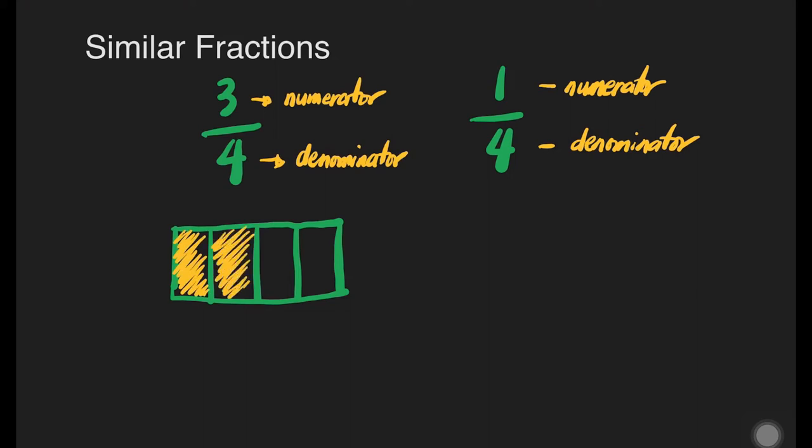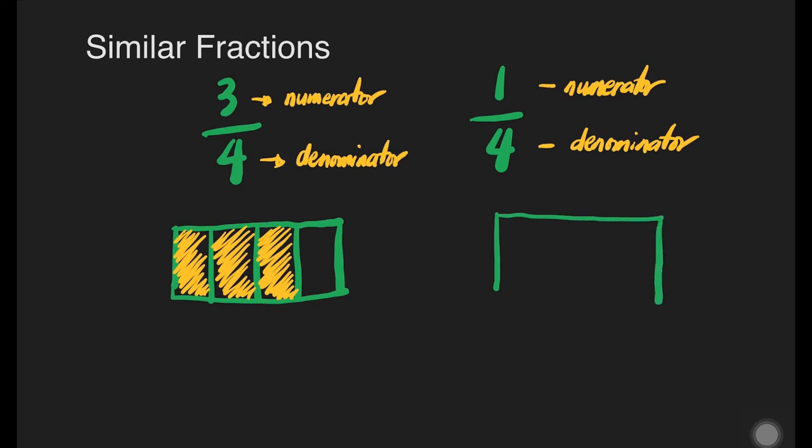That's 1, that's 2 and that's 3. Let us have now the 1 fourth. Let's draw the 1 fourth. It is divided into 4 equal parts and 1 part is shaded. Okay, we have already similar fractions. We can say that 3 fourths and 1 fourth are examples of similar fractions.